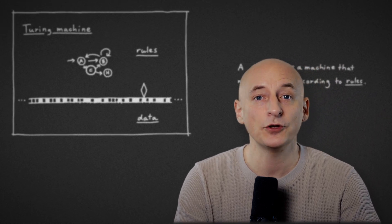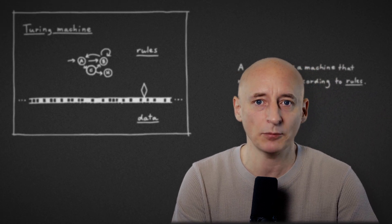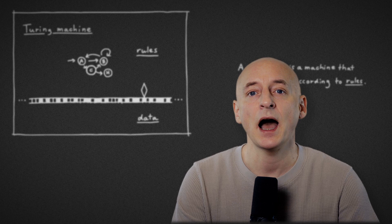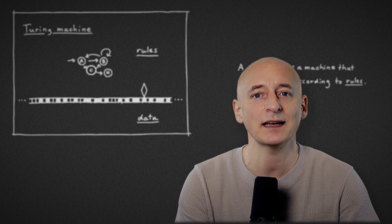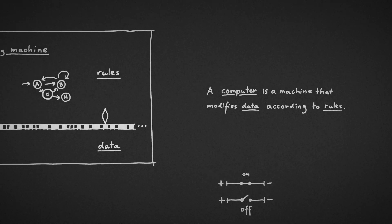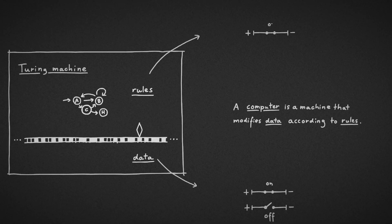But as I mentioned before, the Turing machine is a purely theoretical model. The question now is, how can we build a physical machine that can actually do this? Our computers are based on electricity or electronic circuits that can be either on or off. Now, how can we translate data and rules into these two states?